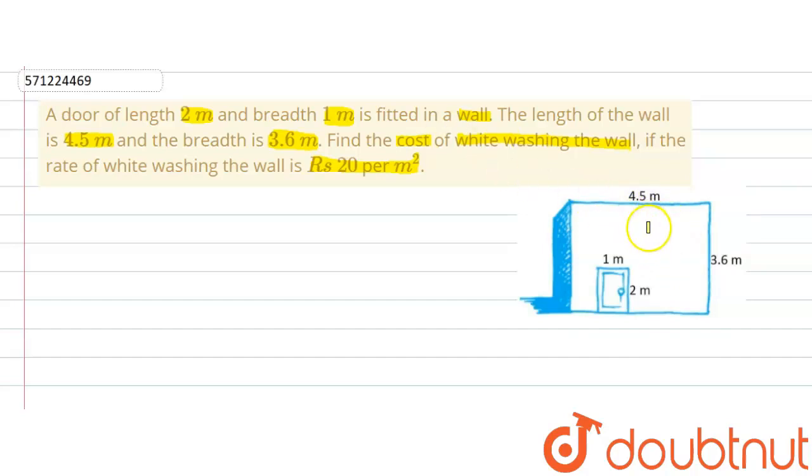Now if we observe, how much area will be whitewashed? The area of this wall minus the area of the door, because doors are not whitewashed. So the area of the door needs to be excluded or subtracted from the area of the wall.